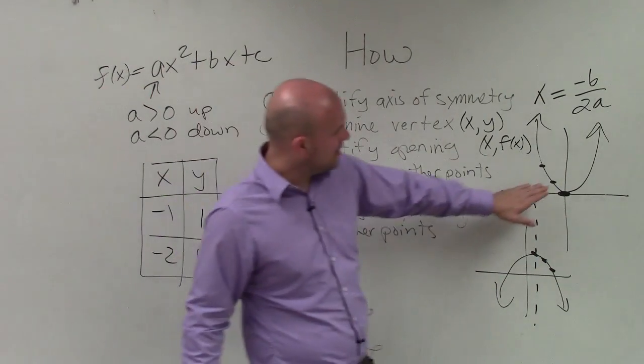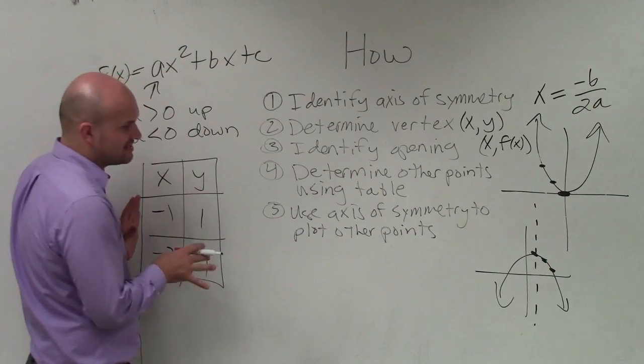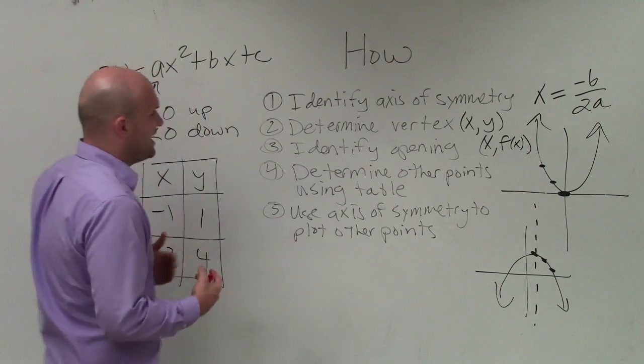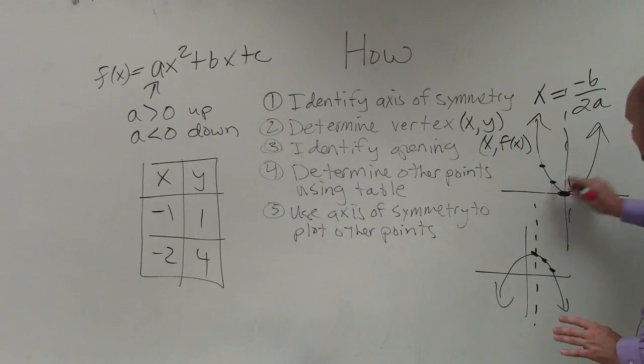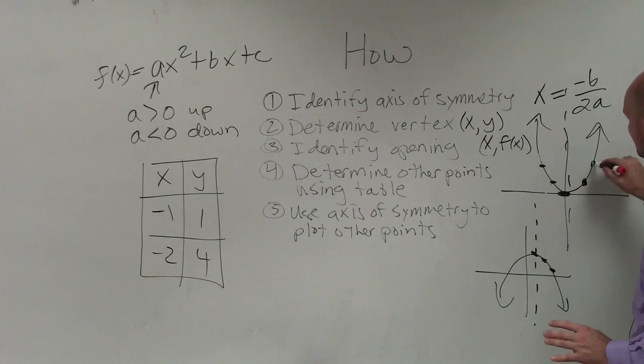Then I go ahead and plot those two points. And then the last step is to use the axis of symmetry to plot the other points. And so what we notice is when we have this axis of symmetry, these points are reflected over.